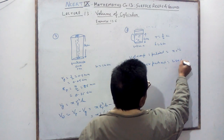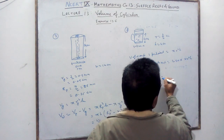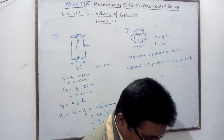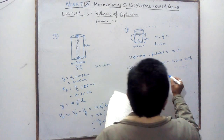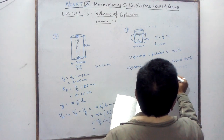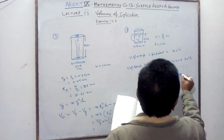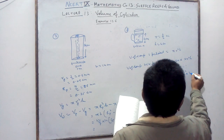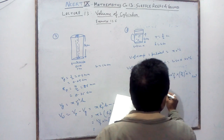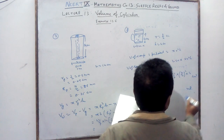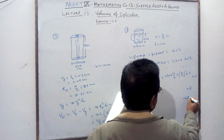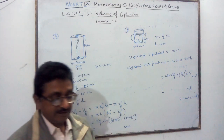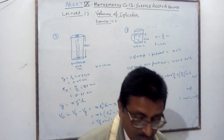Volume of soup for 250 patients = 250 × πr²h. Put in the values: 250 × (22/7) × (7/2)² × 0.4 centimeter cube. You can then convert to milliliters because 1 centimeter cube equals 1 ml. That gives you the final answer very simply.